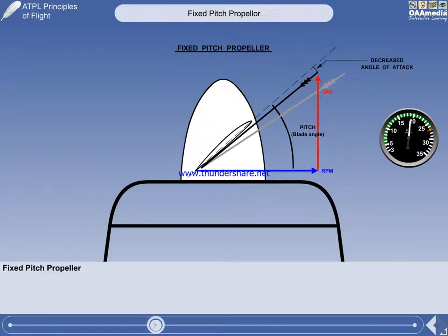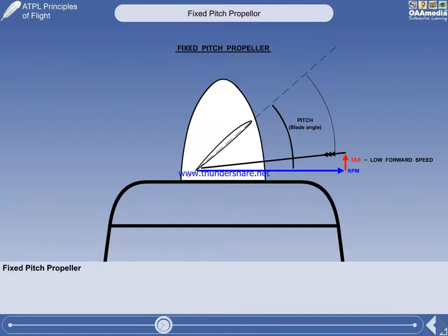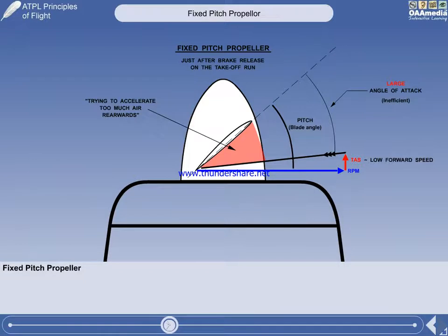Let's now consider the effect of aircraft true airspeed on the angle of attack of a fixed-pitch propeller. At low forward speed, the angle of attack is very big. The illustration shows a typical light aircraft just after brake release on the take-off run.